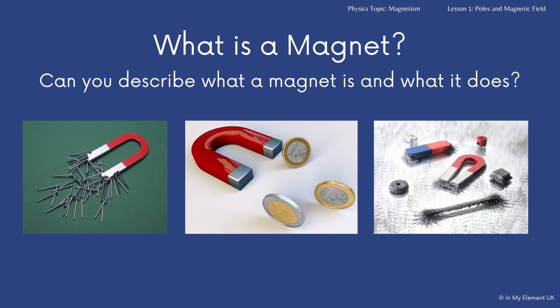So the first two images have just horseshoe magnets on them, and the second one has several different types of magnets, the red and blue one being a bar magnet. And there is also a horseshoe one again.